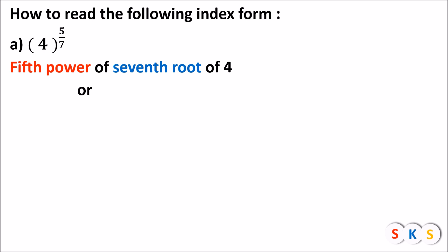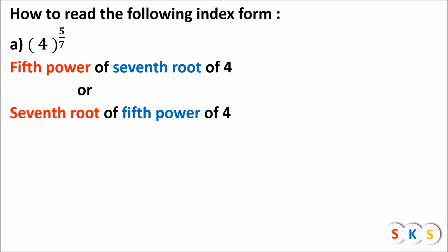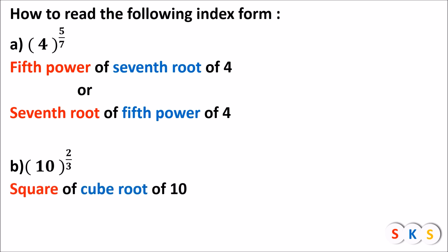You can also read this index form as the seventh root of the fifth power of 4. So there are two ways: first power and then root, or root and then power. For example, 10 raised to 2 upon 3 — the numerator is 2 (second power or square) and denominator is 3 (third root or cube root). So we read it as square of cube root of 10, or cube root of square of 10.